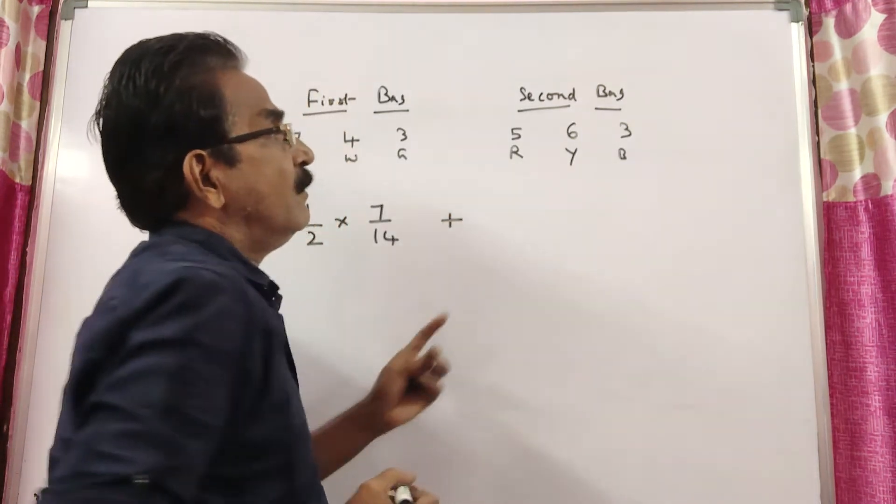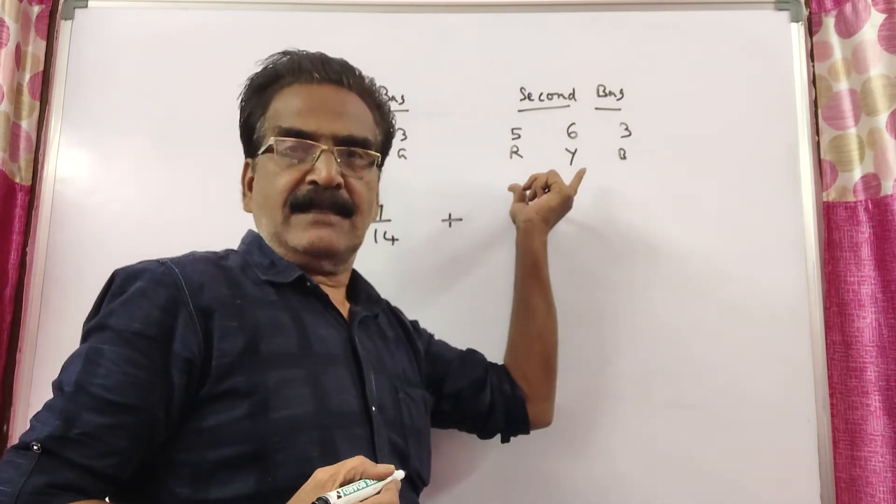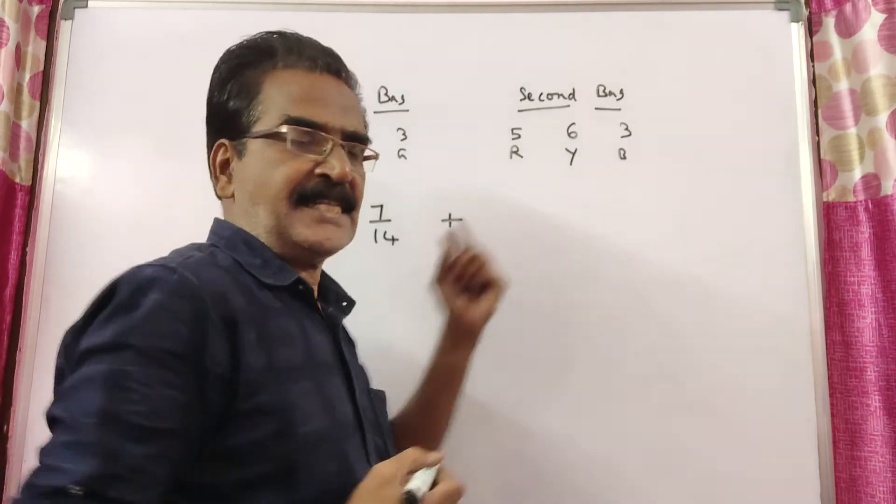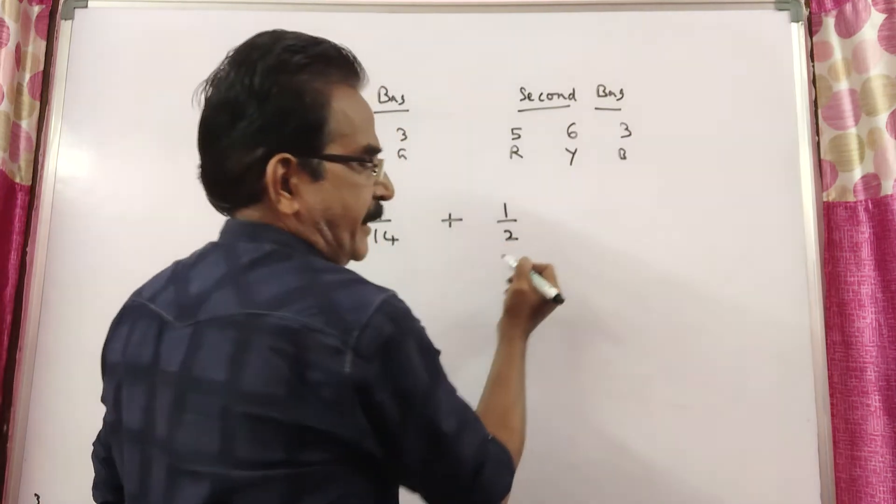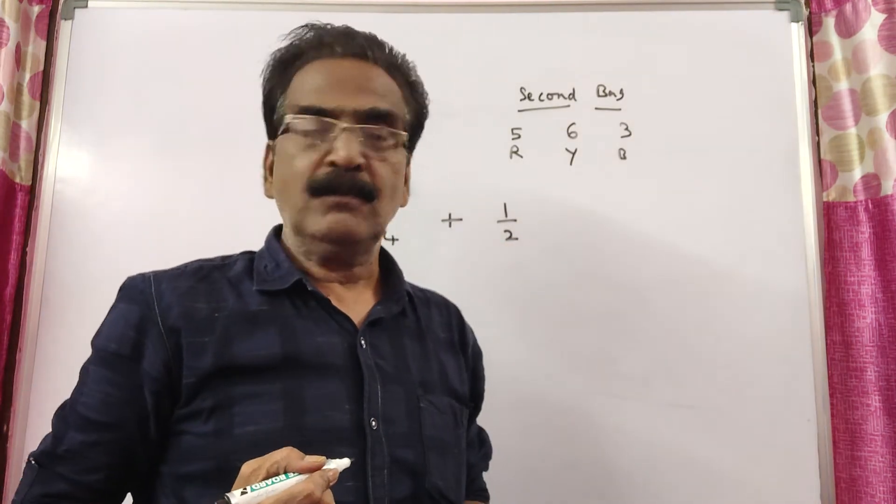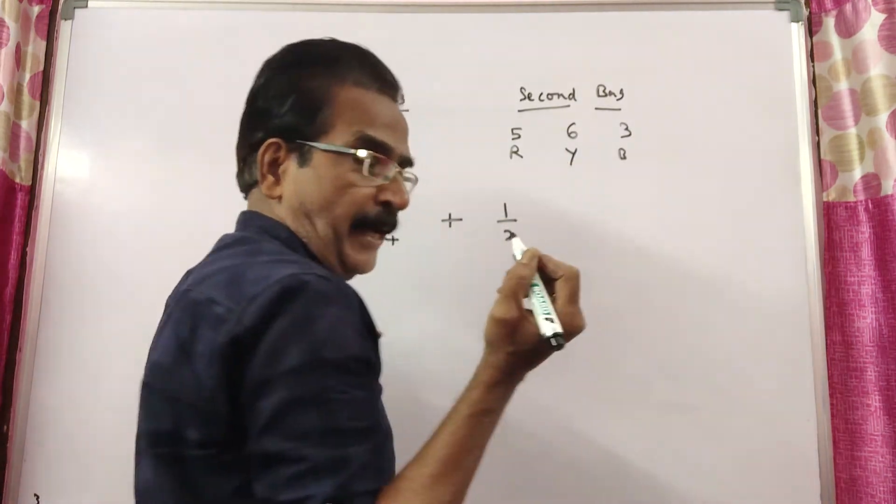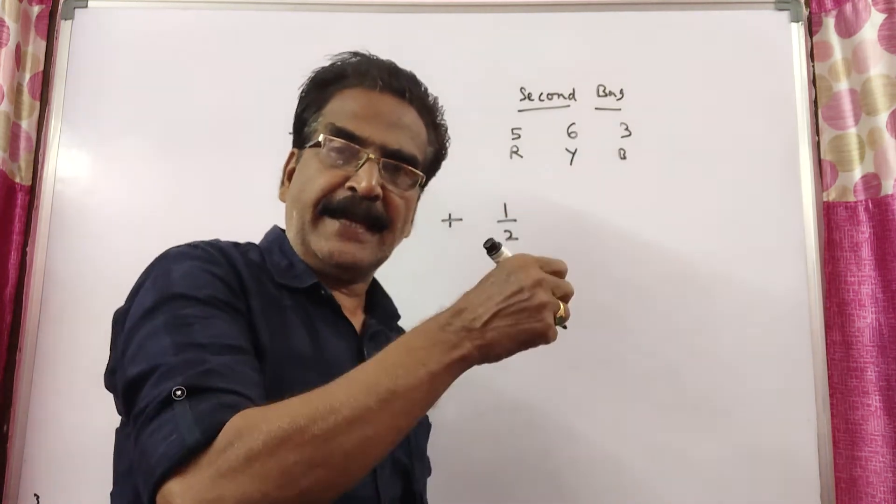And plus, here in the second case, what is the probability of drawing the second bag? The probability of drawing this bag is also 1 by 2, and we have 2 bags. So, probability of selecting 1 bag is 1 by 2.